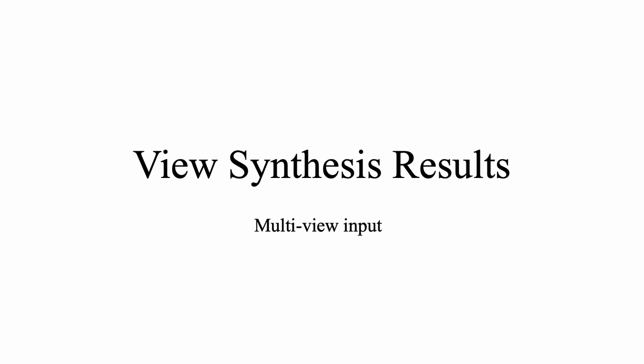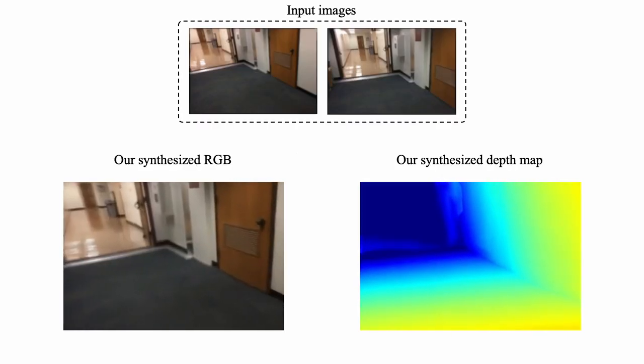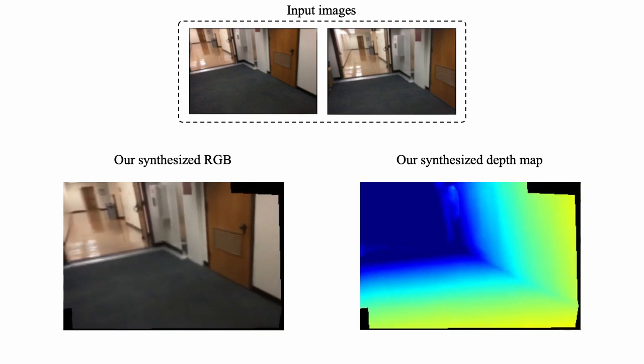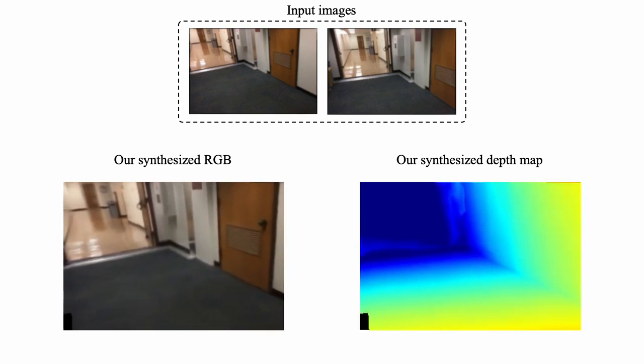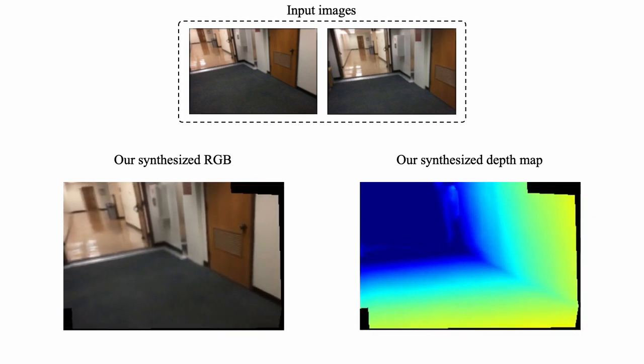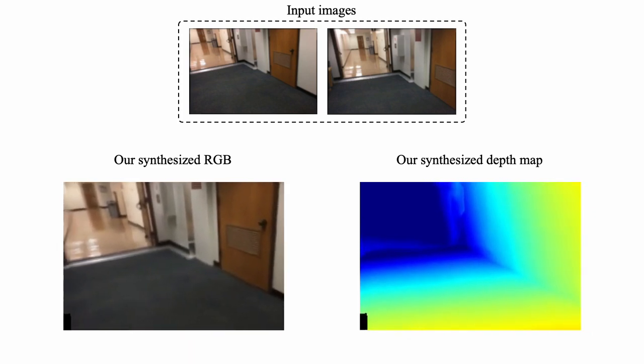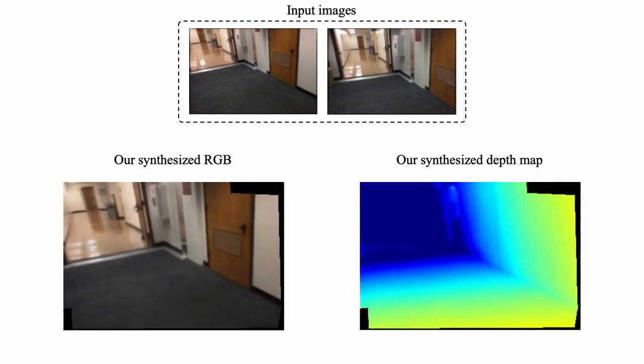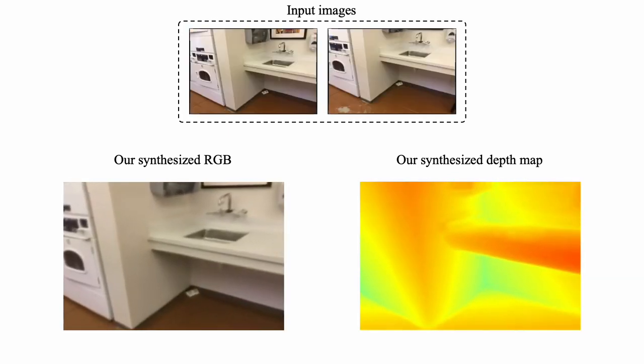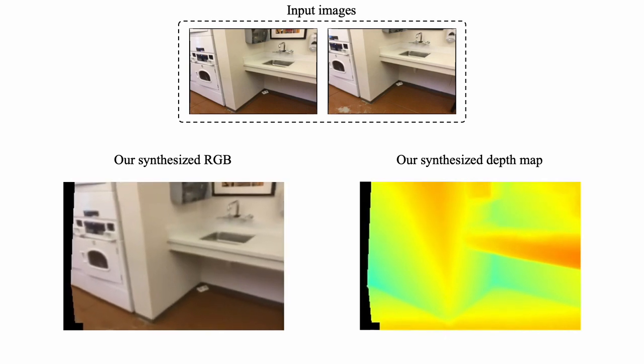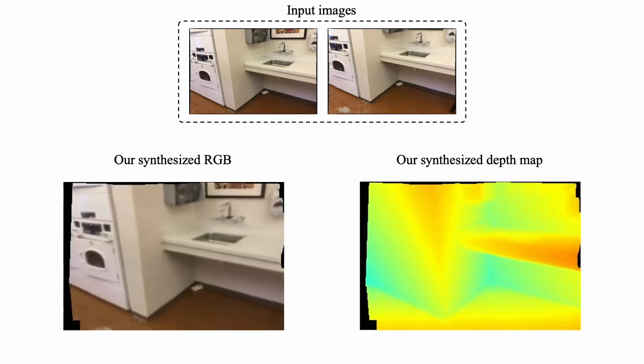Next, about novel view synthesis with multi-view input. Given two input images, our model can deliver view synthesis results in a larger range of view. We can see that both the synthesized RGB and depth map results are seamlessly merged with the two inputs because of our multi-view consistent predictions. This example also demonstrates our advantages in view synthesis because of our accurate and consistent reconstruction.